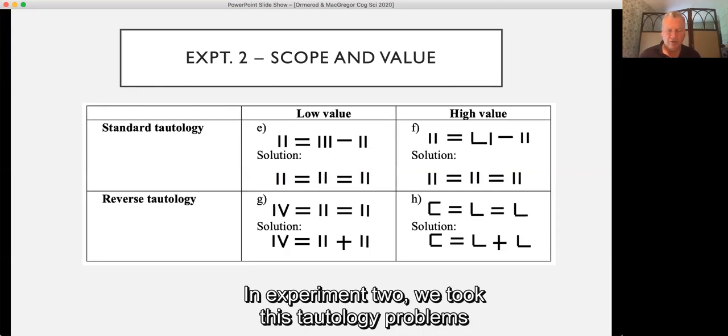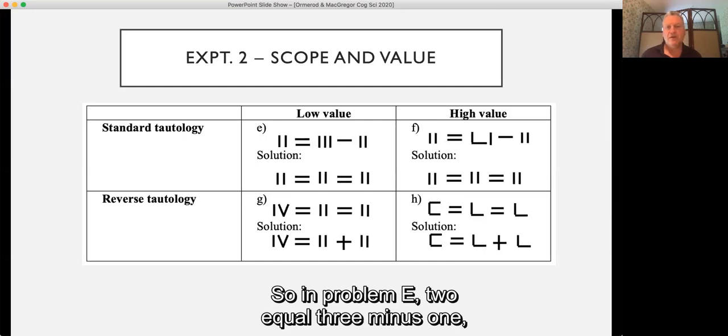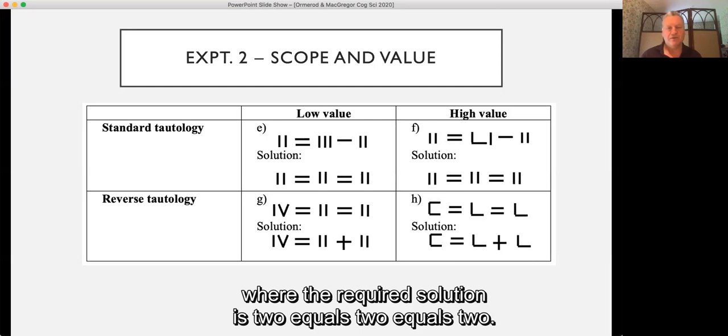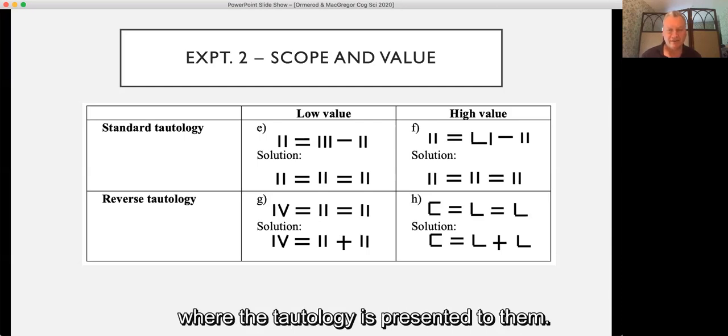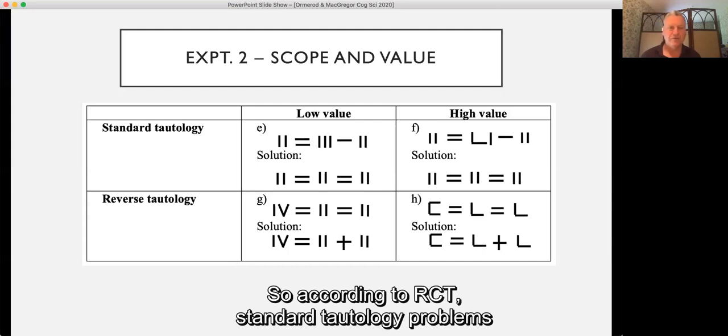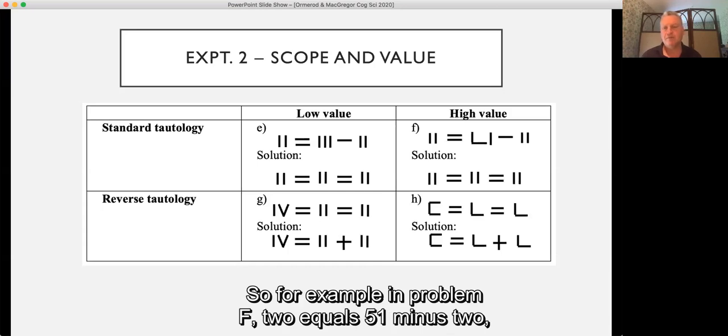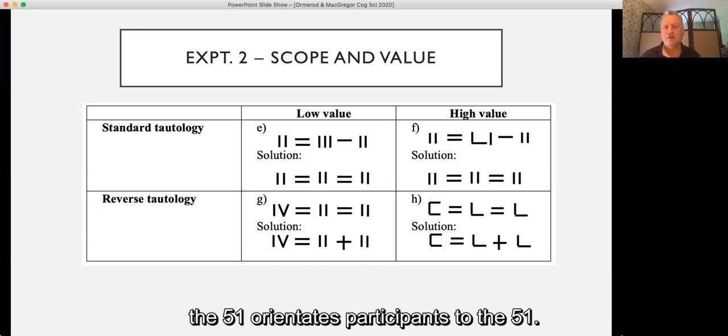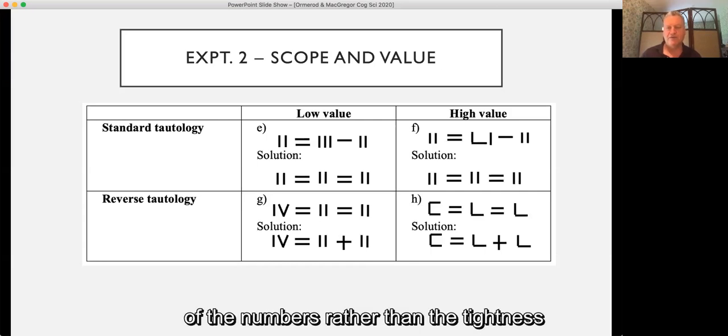In experiment two, we took the tautology problems of Knoblich et al. and we compared them against a reverse tautology. So in problem E, II = III - I, where the required solution is II = II = II, that's a standard one. But participants were also given, in another group, IV = II = II, where the tautology is presented to them. And the presentation in the initial problem representation of the tautology ought to break the constraint of prior knowledge. So according to RCT, standard tautology problems should be much harder than reverse tautology problems. Again, we manipulated value. So for example, in problem F, II = LI - II. The 51 orientates participants to the 51. Changing that will make the most value change to the whole solution. Likewise, in problem H, C = L = L. Again, orientating participants to the value of the numbers, rather than the tightness or scope of the prior knowledge.